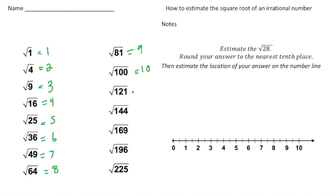The square root of 121 is 11. The square root of 144 is 12. The square root of 169 is 13. The square root of 196 is 14. And the square root of 225 is 15.